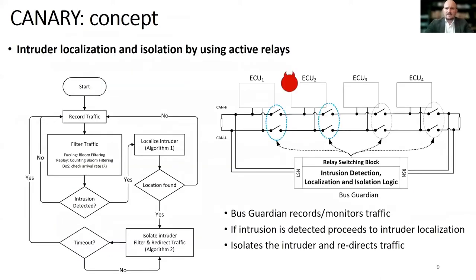For this purpose, in Canary we took an entirely distinct approach. We have a bus guardian that monitors the left and right ends of the bus. The bus guardian runs some intrusion detection mechanisms. In our work we rely on a simple bloom filtering that checks for known identifiers or fixed frame content, as well as checking the arrival rate of frames and verifying that it does not exceed a specific threshold, which would signal a flooding attack. Of course, any other IDS can be implemented at the bus guardian level, but this is a topic in its own and out of scope for the current communication.